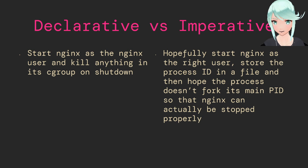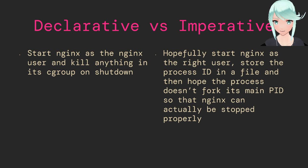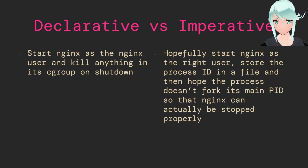One of the big differences between Systemd and other things like OpenRC is that Systemd is a very declarative environment. In declarative environments, you specify what you want and the system will figure out what it needs to do to get there. In an imperative environment, you specify all of the steps you need to do to get there. It's the difference between writing a SQL statement and a for loop.